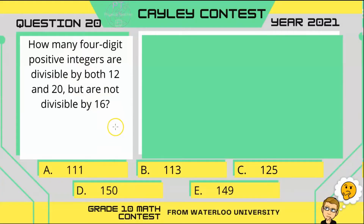All right, so this question asks: how many four-digit positive integers are divisible by both 12 and 20, but are not divisible by 16?